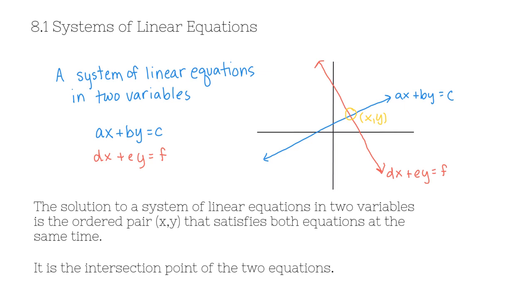The intersection point of the two lines is the solution. There are a number of different ways to solve a system of linear equations. The first is graphing — you graph the two lines and look for the intersection point. But more efficient methods exist using algebra. The first algebraic method we'll talk about is the substitution method.